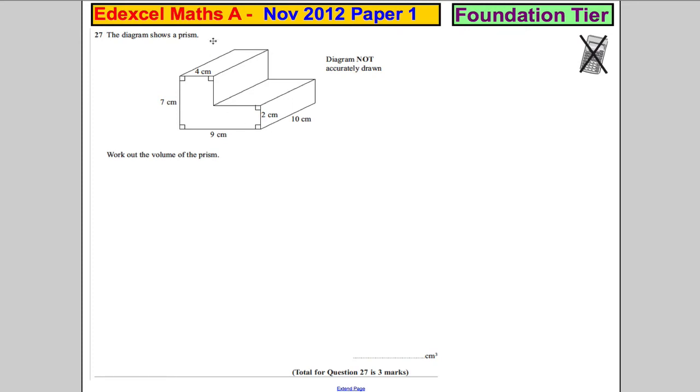Question 27: The diagram shows a prism. Work out the volume of the prism. We want to work out the volume in centimeters cubed.